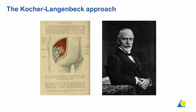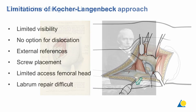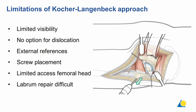The classic posterior approach was described by Kocher more than 100 years ago — the combined Kocher-Langenbeck approach, typically addressing these six fracture types. Its limitations include limited visibility, no option for real dislocation of the femoral head, lack of external references, unreliable intraarticular screw placement visibility, and limited access to femoral head lesions. Additionally, it is difficult to repair any torn labrum.